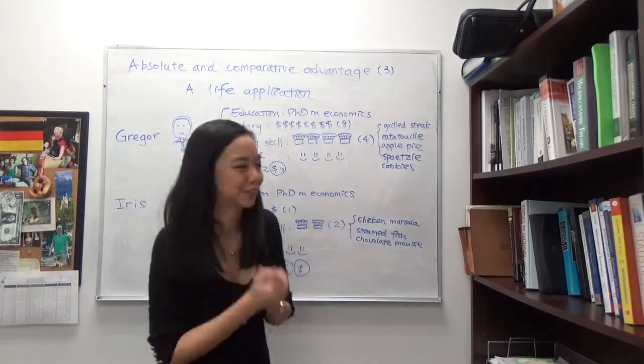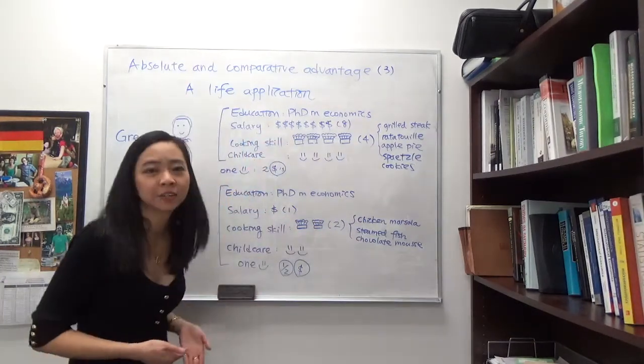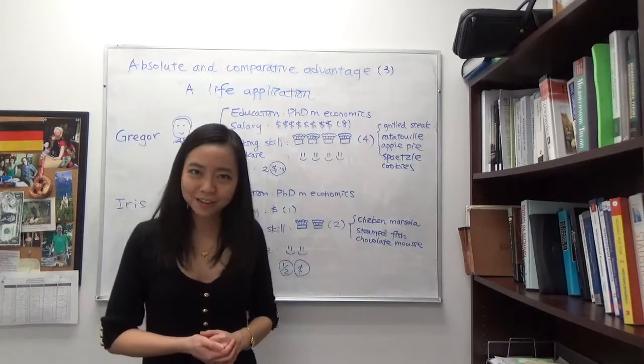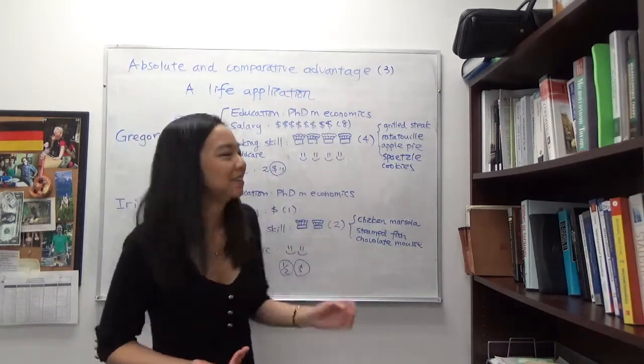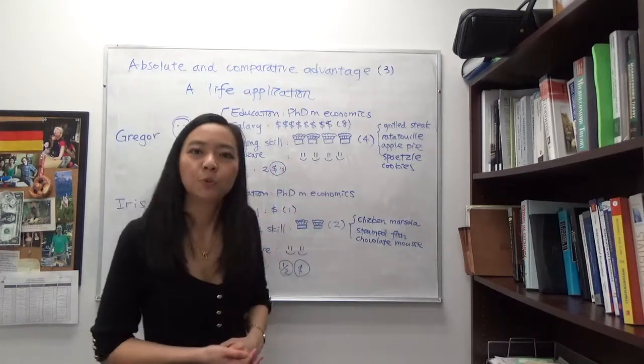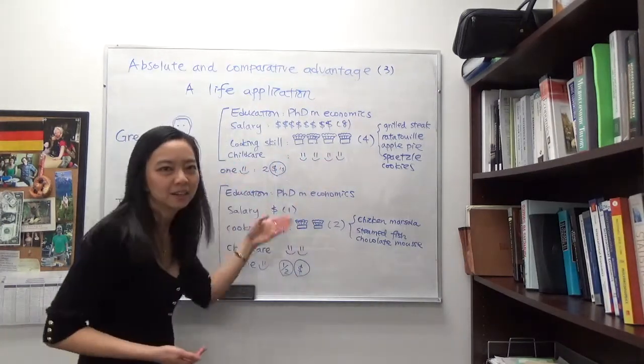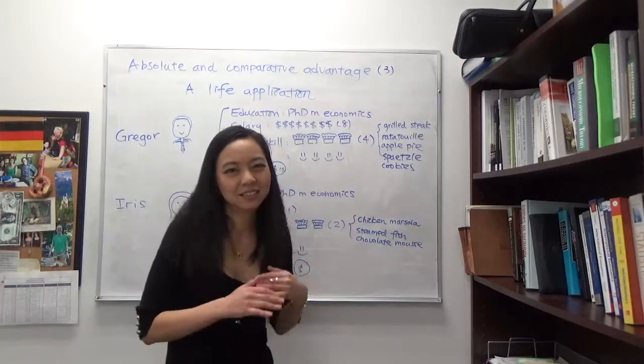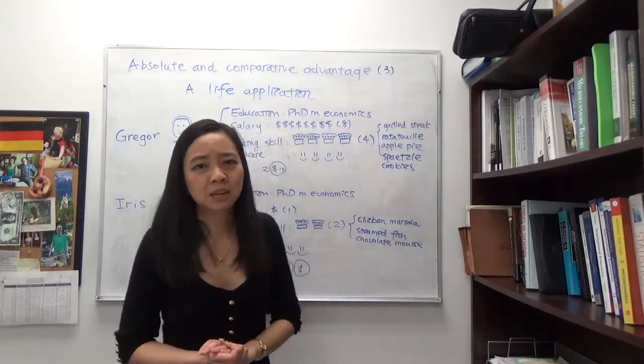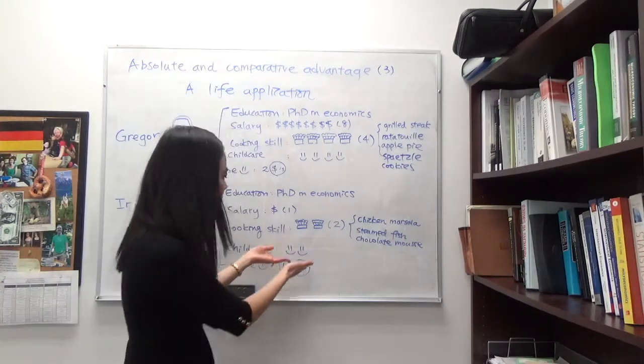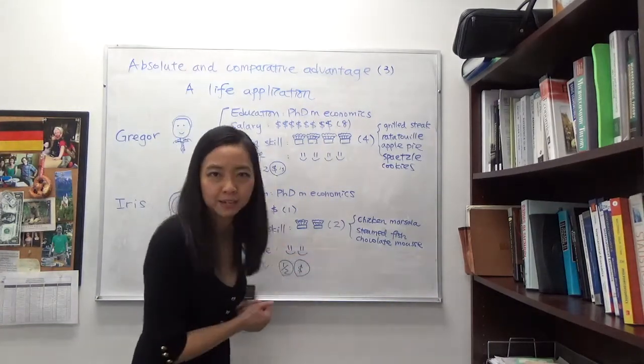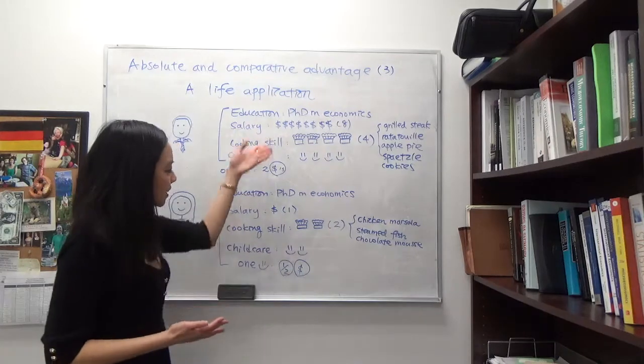When it comes to childcare, Gregor is a very patient dad and he's really laid back, so children all love to hang out with him. We award him with four smiley faces. What about Iris? Well, Iris is a little less patient and sometimes when the children make her crazy, she will yell at them, so we award her with two smiley faces.